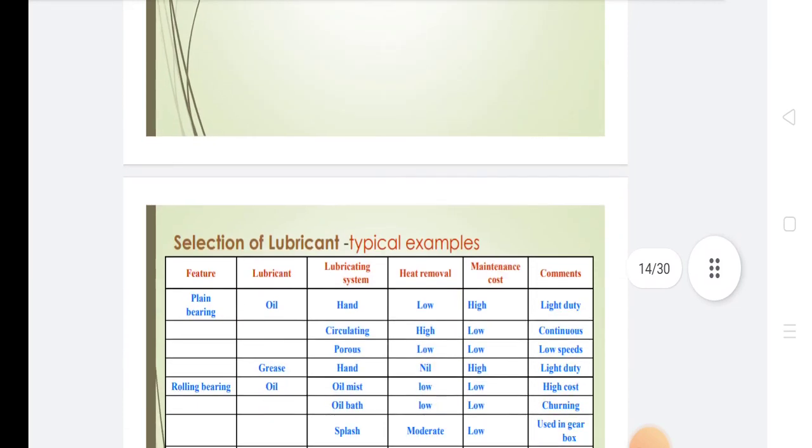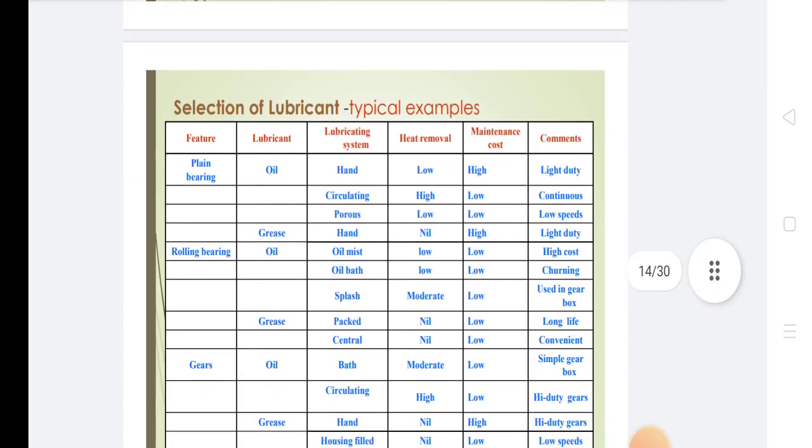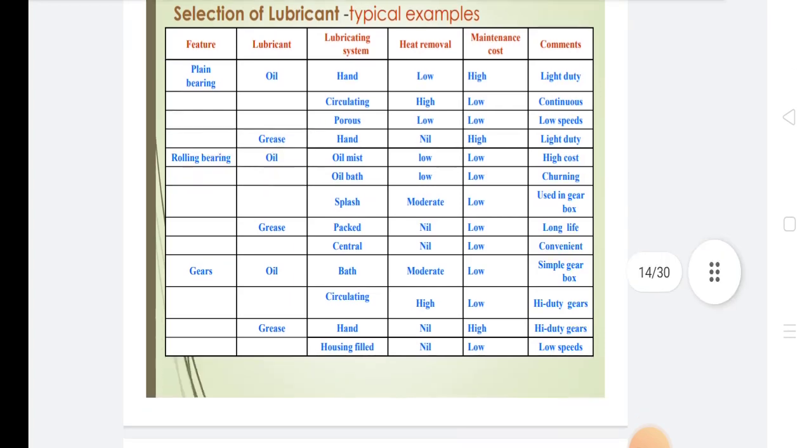After the selection of lubricant, these are the features. This table shows how to select a lubricant, including plane bearing, rolling bearing, grease, lubricant types, lubricant system, heat removal, maintenance cost, and comments.